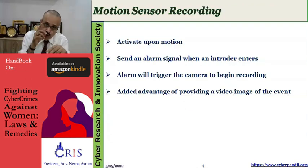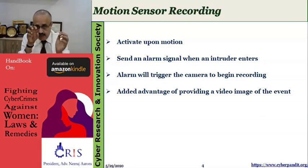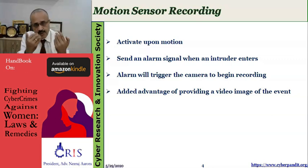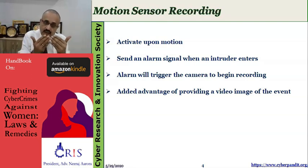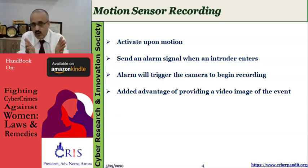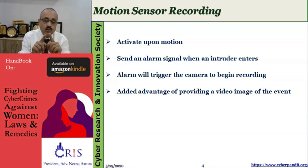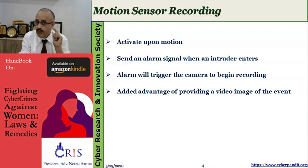Another very important point: whether your CCTV does motion sensor recording or not. Motion sensor recording means the camera is working but will only record when something comes before it — when something changes in front of the camera; otherwise there is no recording. For example, one recording is done at 10 PM, and if nothing comes before the camera for one hour, the next recording would be at 11 PM. If you file this in court and have not informed the court about motion sensor recording, how will you justify that one-hour gap? Make sure you mention this in your seizure memo, in your 65B certificate, or in your affidavit.